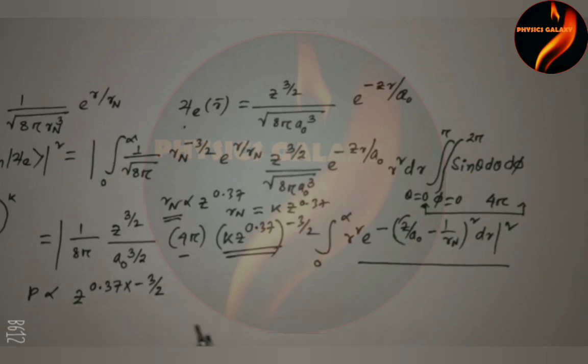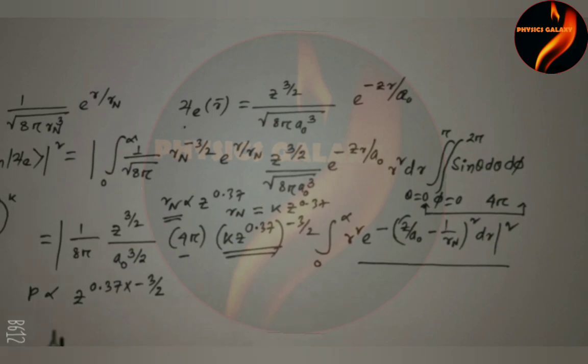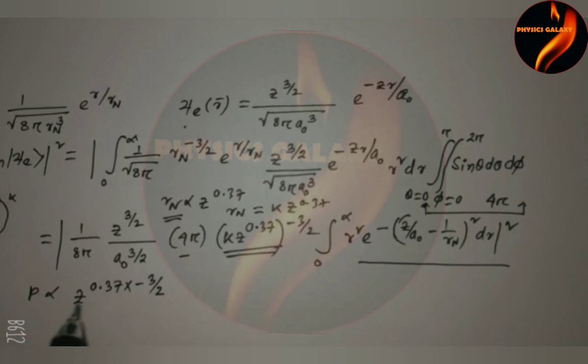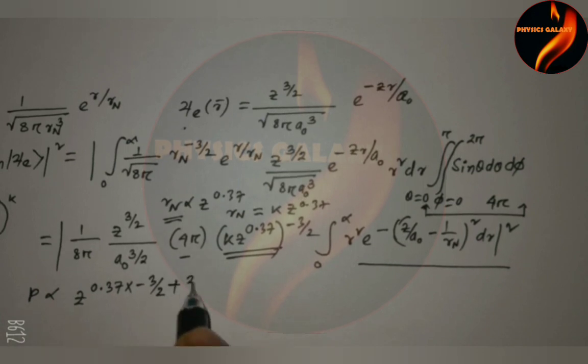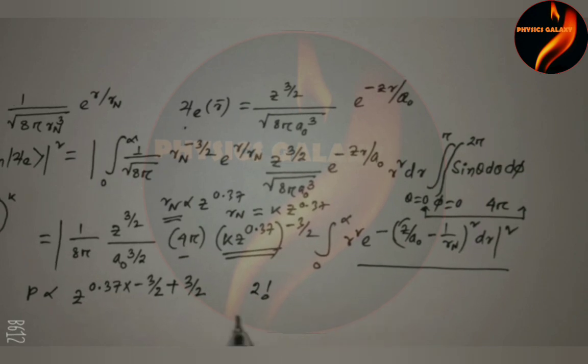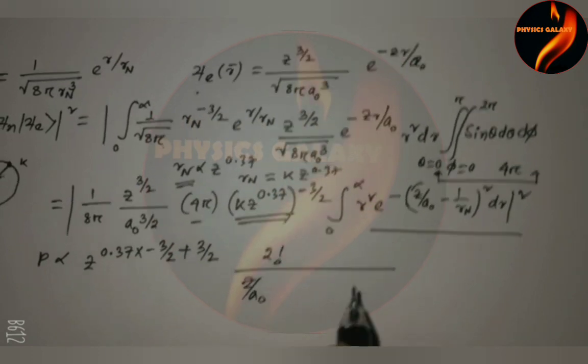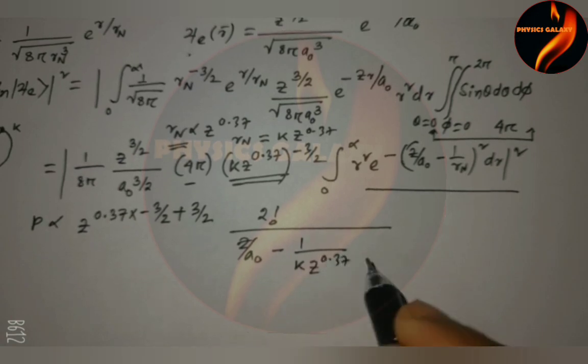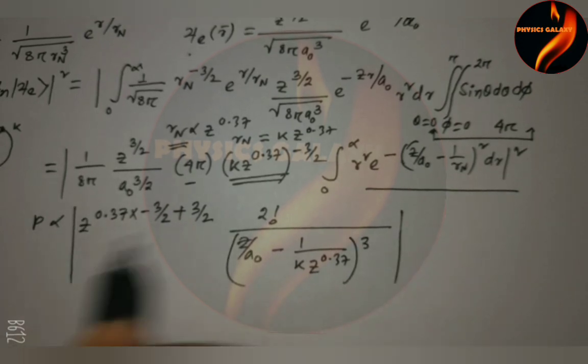So the required proportionality of Z to the power alpha. We just take the proportionality, the constant is not taken, only the Z variation. So Z to the power 0.37 times 10 to the power minus 3/2 plus 3/2. And this term with the Laplace transform, that is 2 factorial divided by Z/a0 minus 1/(k·Z^0.37), this is the Rn value, whole to the power 3 and mod square.